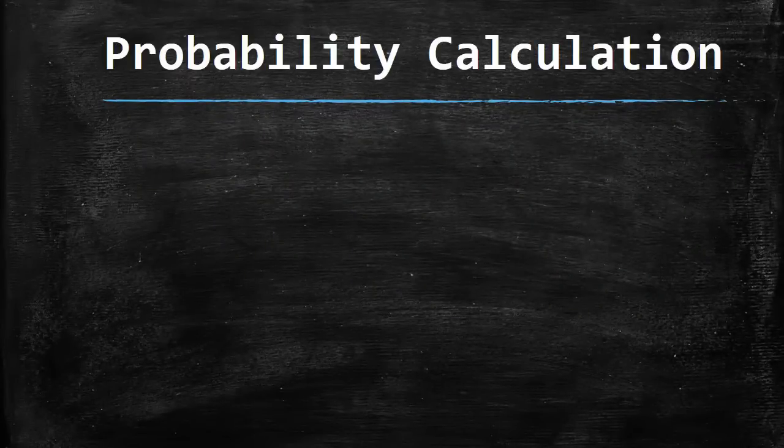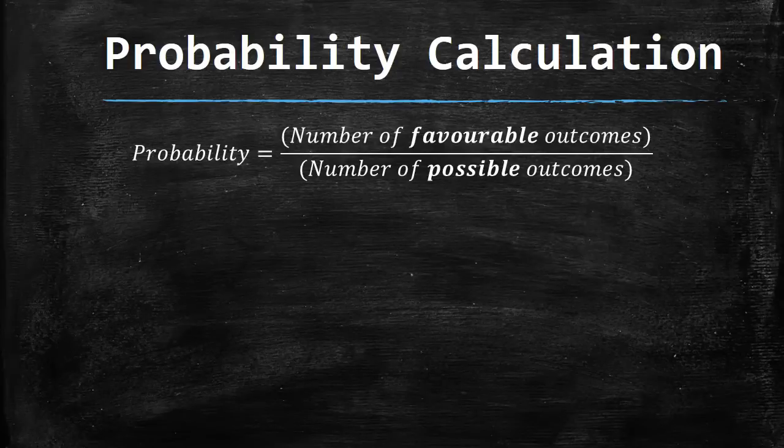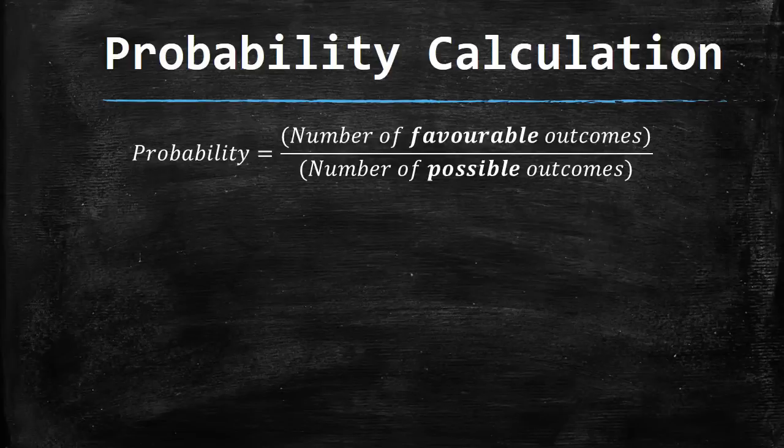Last but not least, we need to look at how we can actually calculate the probability of an event happening. It's a really simple formula: probability equals the number of favorable outcomes divided by the number of possible outcomes.